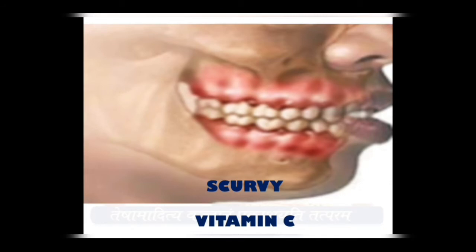Vitamin C deficiency is most prominently identified by bleeding gums and rotten teeth. Bleeding gums occur due to damaged, dry skin which can easily rupture, exposing blood vessels. Bleeding gums are often one of the first obvious signs of vitamin C deficiency, and severe deficiency can lead to tooth loss. Bones heal very slowly in vitamin C deficiency, and low vitamin C levels are also linked to an increased risk of infections.